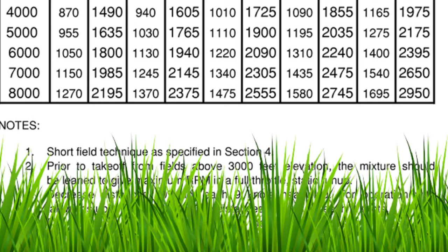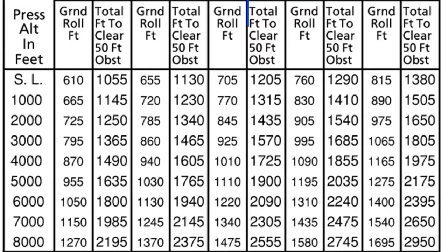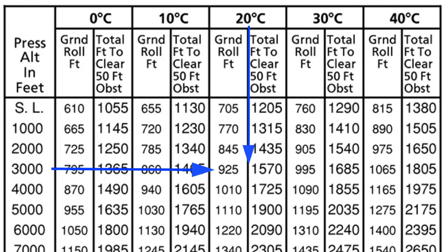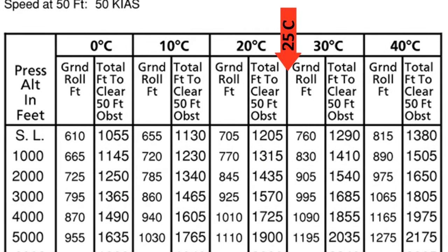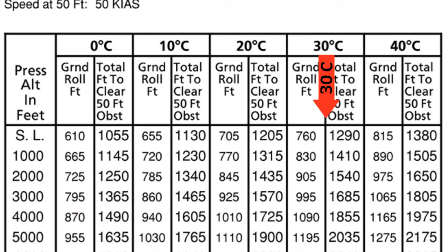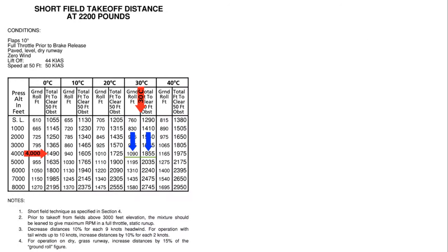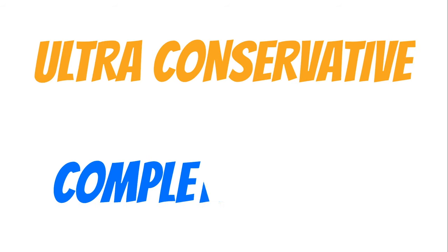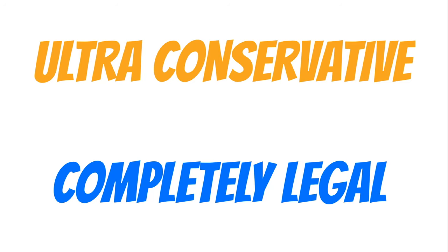This note basically says we need more runway if we're taking off on dry grass because grass creates a ton of drag. Now let's say the outside air temperature is 25 degrees and our pressure altitude is 3,500 — what do we do? We can do one of two things. Sometimes when I'm in a pinch, I'll round up to the next higher temperature and the next higher pressure altitude to give me a worst-case scenario takeoff distance. In this situation, we'd have a ground roll of 1,090 feet and would need 1,855 feet to clear a 50-foot obstacle. This is ultra conservative and totally legal.